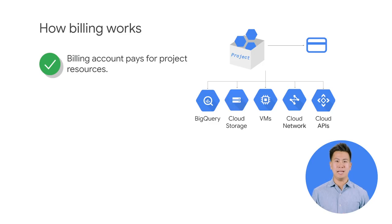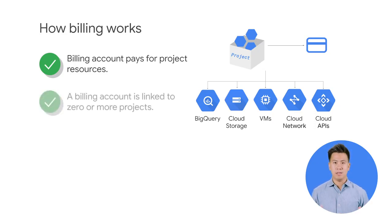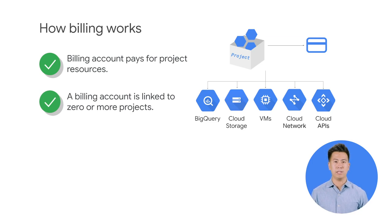Billing in GCP is set up at the GCP project level. When you define a GCP project, you link a billing account to it. This billing account is where you'll configure all your billing information, including your payment option. You can link your billing account to zero or more projects. Projects that you don't link to any billing account can only use free GCP services.